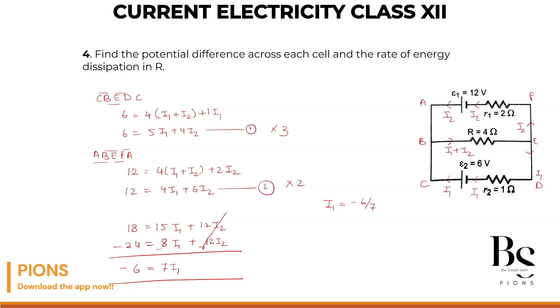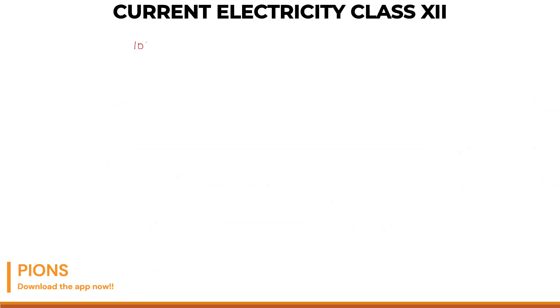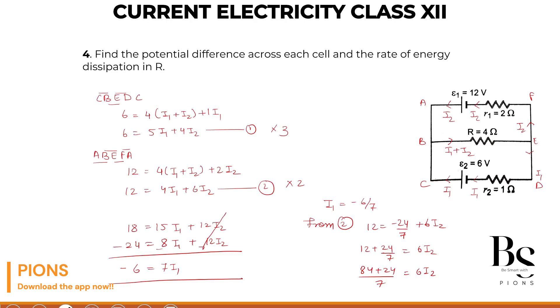What about I2? Let's substitute this I1 value in equation number 2. From equation 2: 12 equals 4I1 minus 24 by 7, plus 6I2. Taking this on the other side, it will be 12 plus 24 by 7 equals 6I2. Simplifying further, 108 by 7 equals 6I2. Taking 6 on the other side: 18 by 7 equals current I2. So current I2 is 18 by 7, and current I1 is minus 6 by 7.